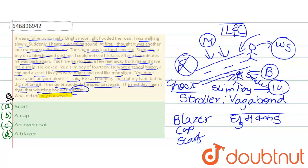Now we'll again read all of the four options. One was scarf. Where was that line? Here. He wore a school blazer, cap and a scarf.